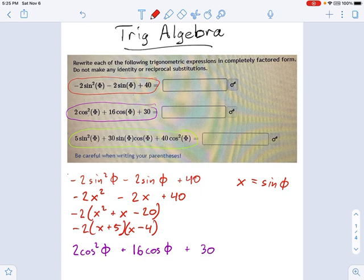And now I'm done. I just need to turn it back into sines. So this would be negative 2 times sine of phi plus 5 times sine of phi minus 4.